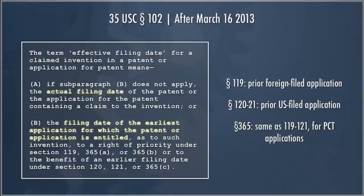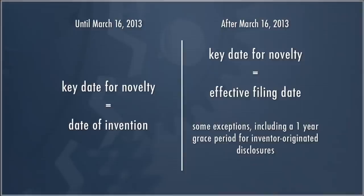The key thing to remember: the key date for novelty pre-March 16th is the date of invention. After March 16th, it's the effective filing date.